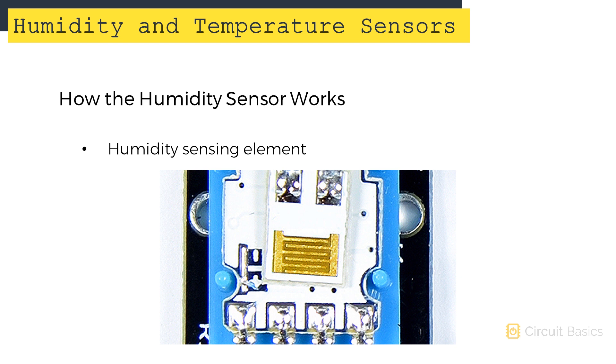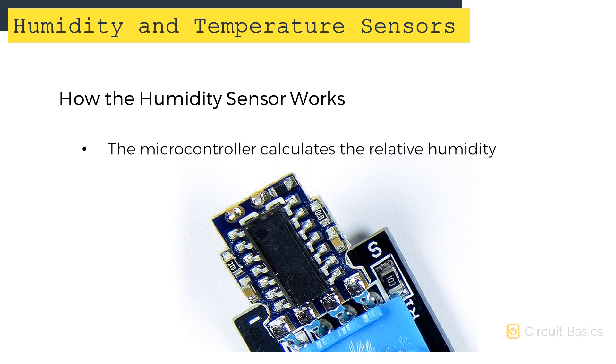The DHT11 measures humidity by detecting the electrical resistance between two electrodes. If you look closely at the humidity sensing element, you can see the two electrodes. The electrodes are separated by a material that absorbs moisture. When the material absorbs water, ions get released from it, which makes the conductivity between the electrodes increase. So higher relative humidity causes the resistance between the electrodes to decrease, and lower relative humidity causes the resistance between the electrodes to increase. The microcontroller detects the change in resistance between the two electrodes and calculates relative humidity from it.